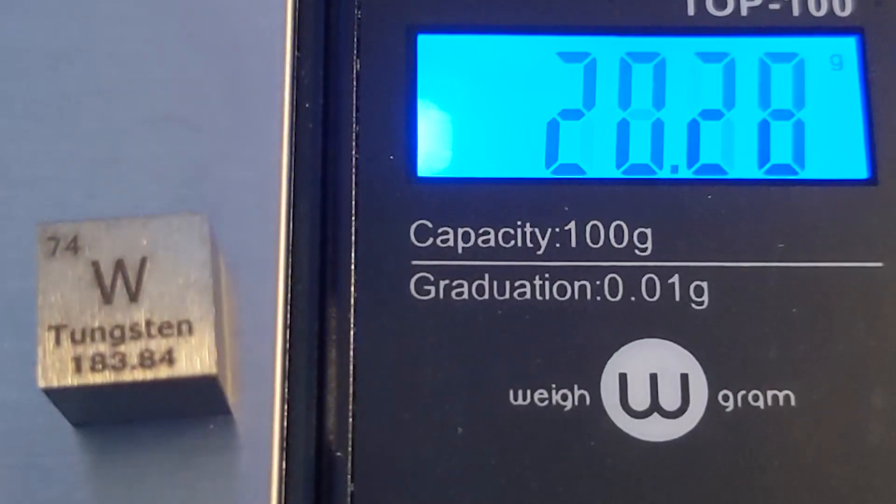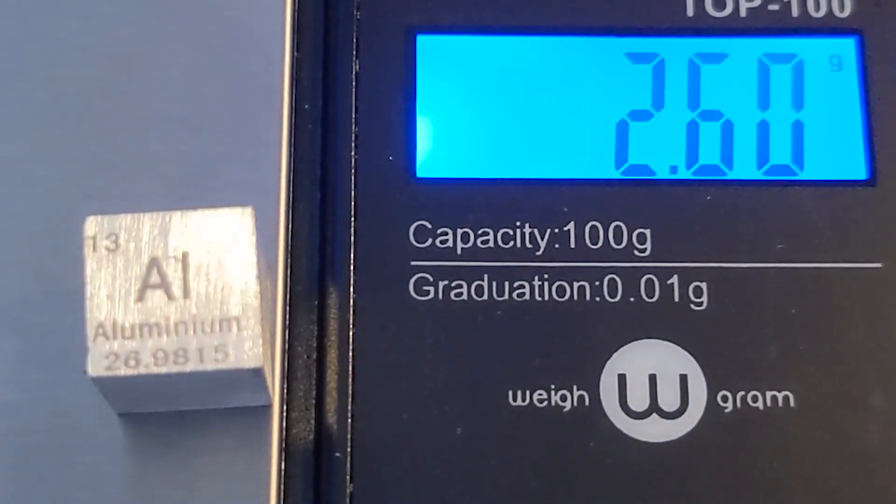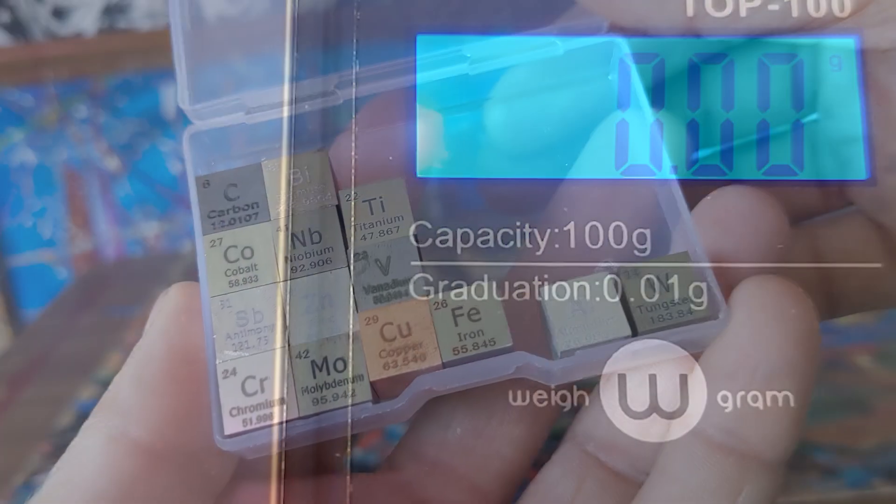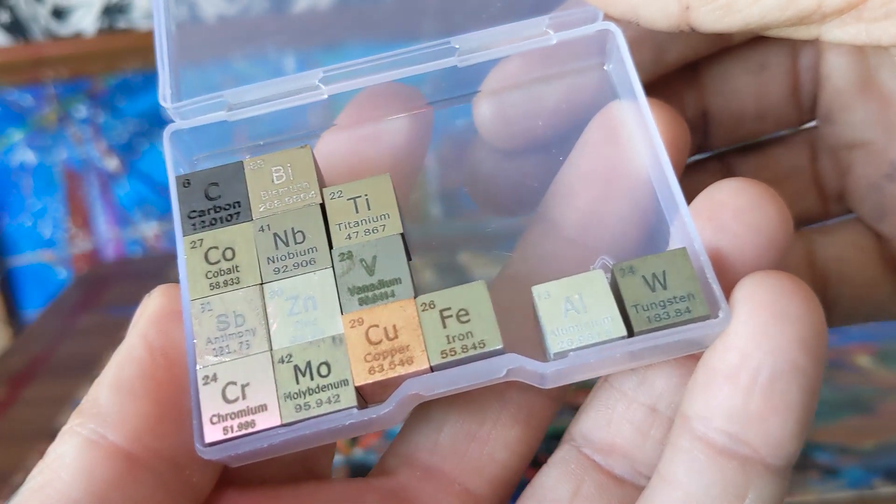I've always known tungsten was heavier than aluminum but it really puts into perspective the different densities and weights of the metals when you can hold a small sample like this.